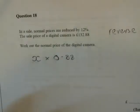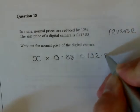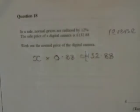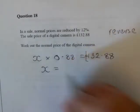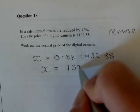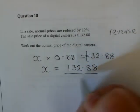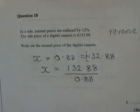So it's X times 0.88 equals £132.88. To find X, we have got to take £132.88 and divide it by 0.88. And because we're dividing by a decimal, we will of course get a larger answer.